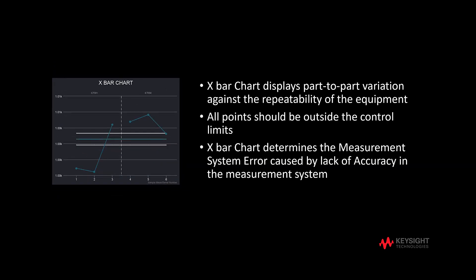The X-bar chart displays part-to-part variation against the repeatability of the equipment. Notice that all points should be outside the control limits, so that part variation can be detected in the measurement system. If the points are inside the control limits, it is difficult to differentiate whether the error is caused by the part itself or the measurement system.